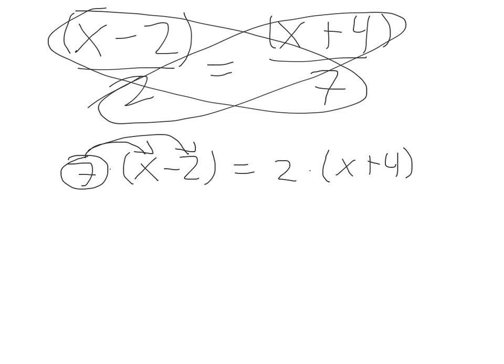You have to multiply 7 by both of the numbers and variables inside of the parentheses. It would be 7 times x and then 7 times negative 2.